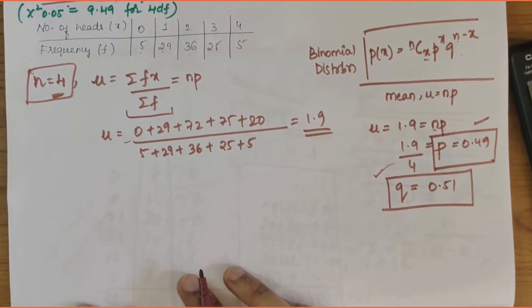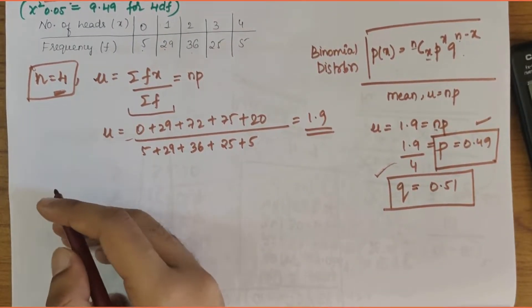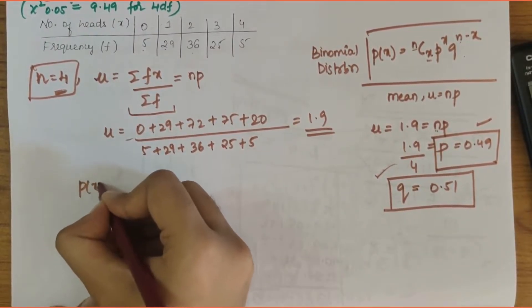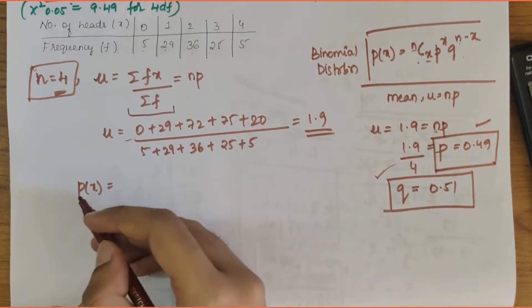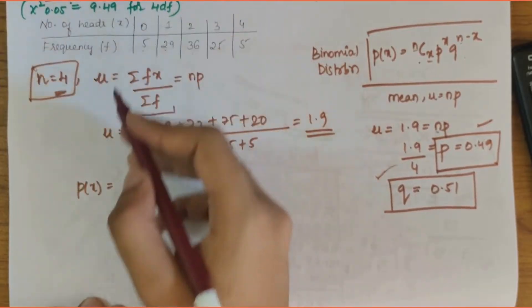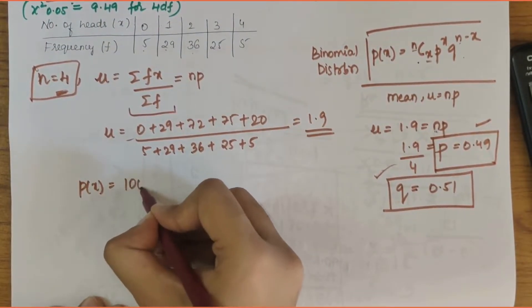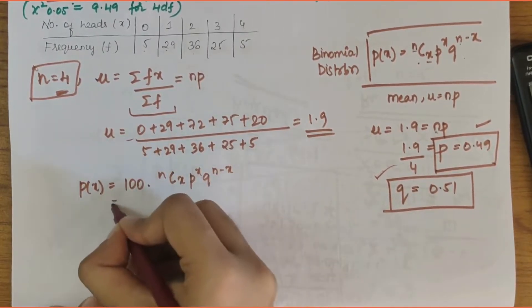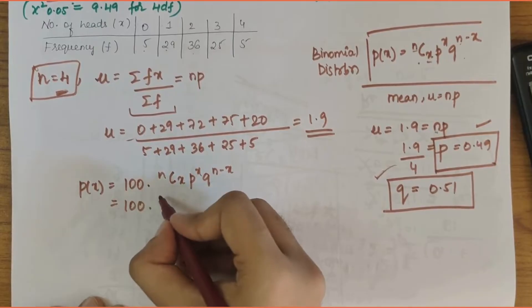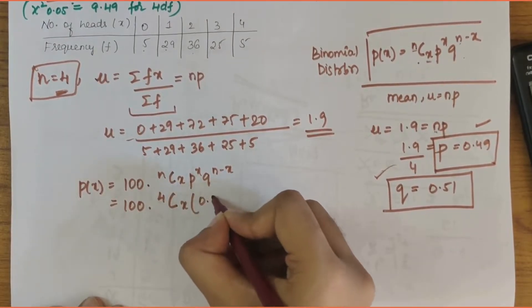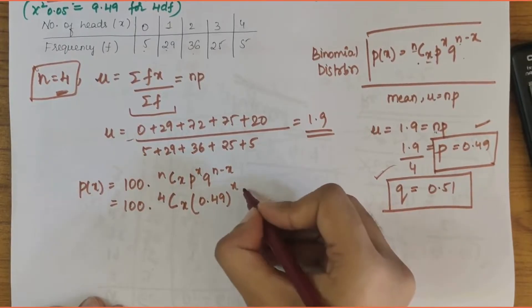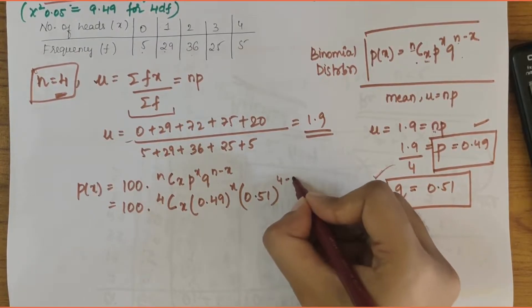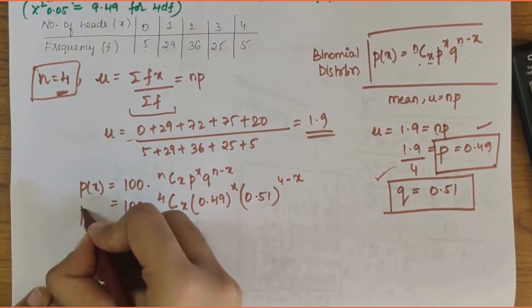We have found the n value, p value, and q value. Now let's proceed with finding out the binomial distribution values or the expected values. p of x equals 100 times nCx times p to the power x times q to the power n minus x. That is 100 times 4Cx times 0.49 to the power x times 0.51 to the power 4 minus x. This is our standard equation.